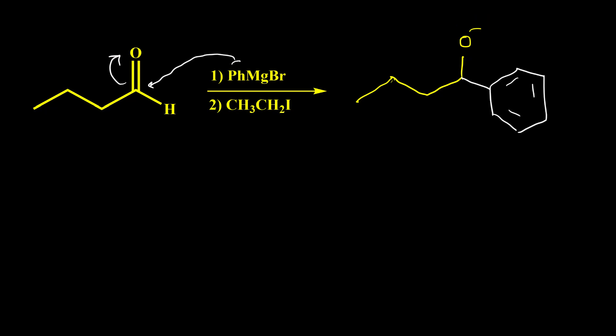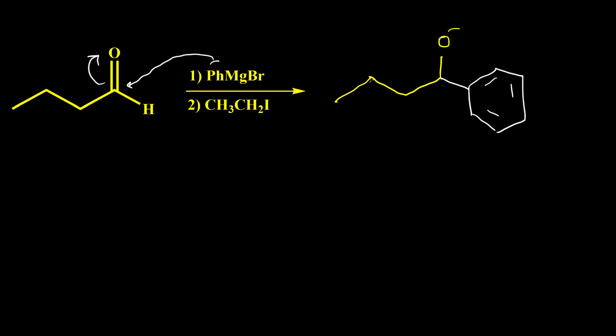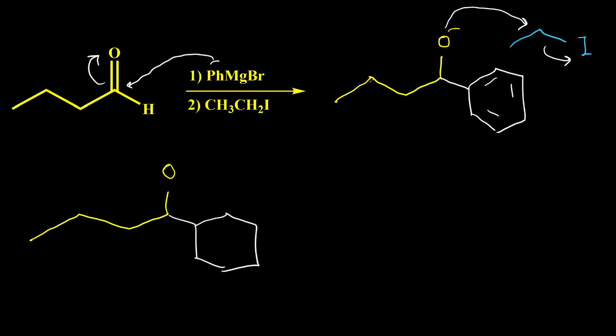Normally for alcohol synthesis we would acidify the mixture to convert O-negative to OH, but instead we can use this anion directly for Williamson ether synthesis. In the next step, when we add an alkyl halide like iodoethane, the negative oxygen easily attacks the carbon and kicks iodine out of the structure, giving us our ether as the final product.